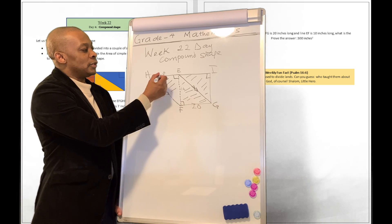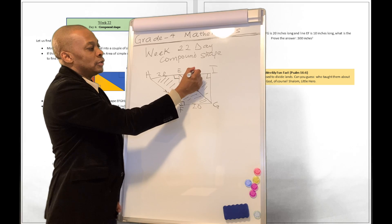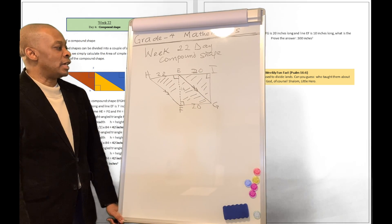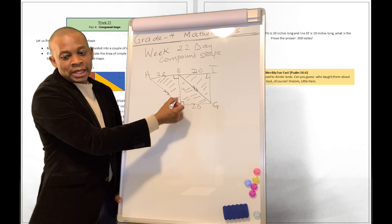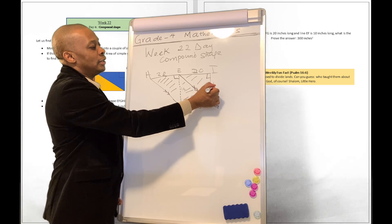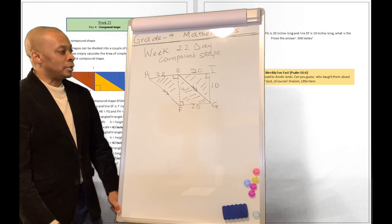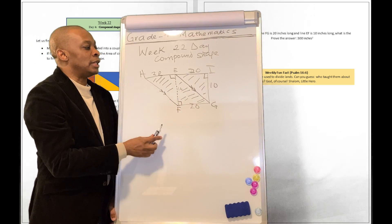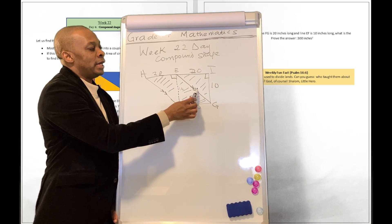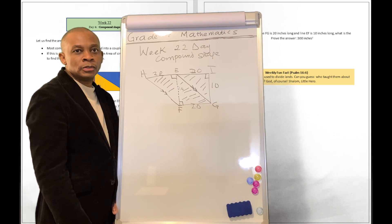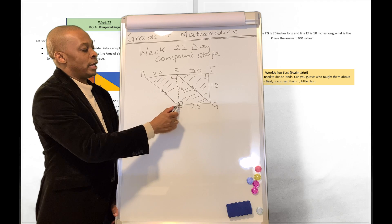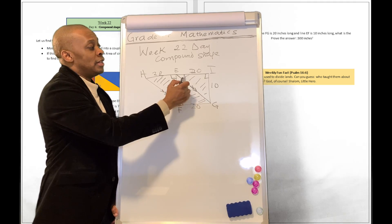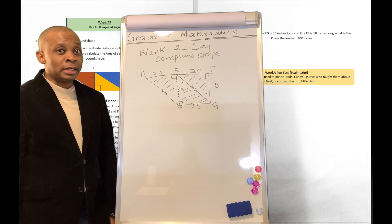Let's assume that this is 20 and this is 20 as well. And if this is 10, then this is going to be 10. Can you see that this compound shape is a collection of three right-angled triangles? This is one right-angled triangle. This is another right-angled triangle. And that's another right-angled triangle.